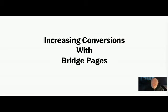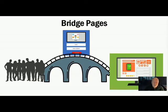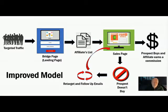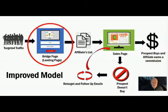I want to focus on bridge pages. The bridge page is the connector between your targeted traffic and that sales page. It's kind of like the glue that puts the two together. In what I call the improved model, a lot of entrepreneurs are not using this. What they do is take targeted traffic and send it right to a sales page — that's an ineffective way. With a bridge page, your targeted traffic goes to the bridge page where you capture their information, they end up on your list, then you send them to a sales page.